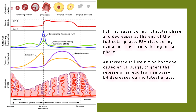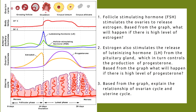Please consider the graph to answer the questions that follow. FSH stimulates the ovaries to release estrogen — based on the graph, what will happen if there is a high level of estrogen? Estrogen also stimulates the release of LH from the pituitary gland, which in turn controls the production of progesterone — based on the graph, what will happen if there is a high level of progesterone? And based on the graph, explain the relationship between the ovarian cycle and the uterine cycle.